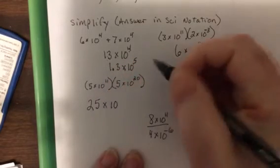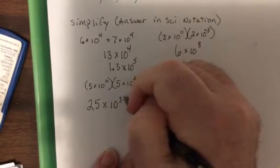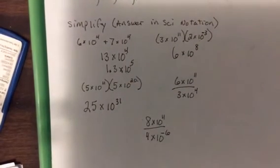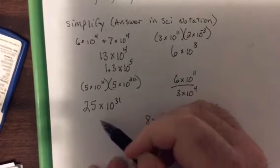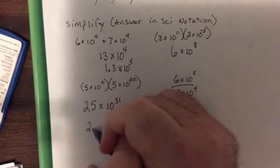This one, five times five is 25 times 10 to the 11 plus 20. This got a lot bigger, 31 zeros, that's a huge number. But wait a minute, this is not between 1 and 10 so I got to make it between 1 and 10.